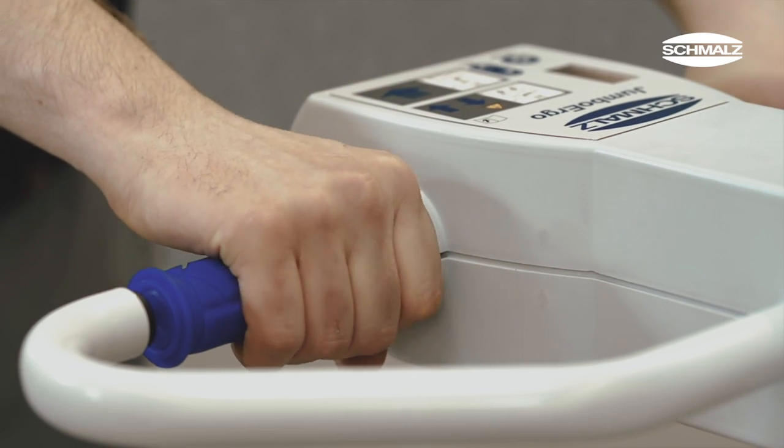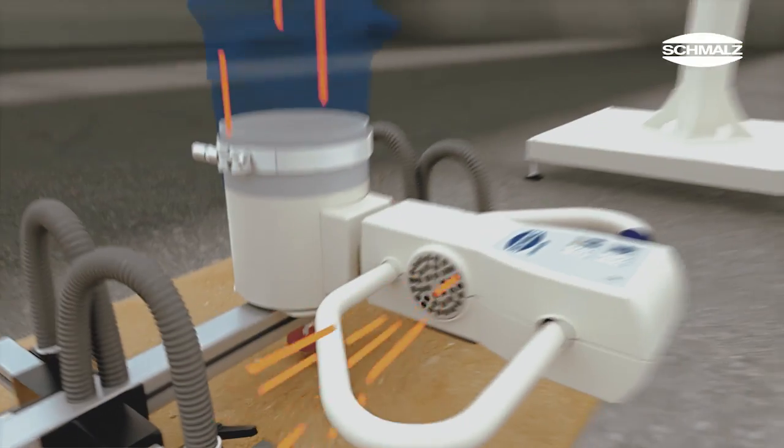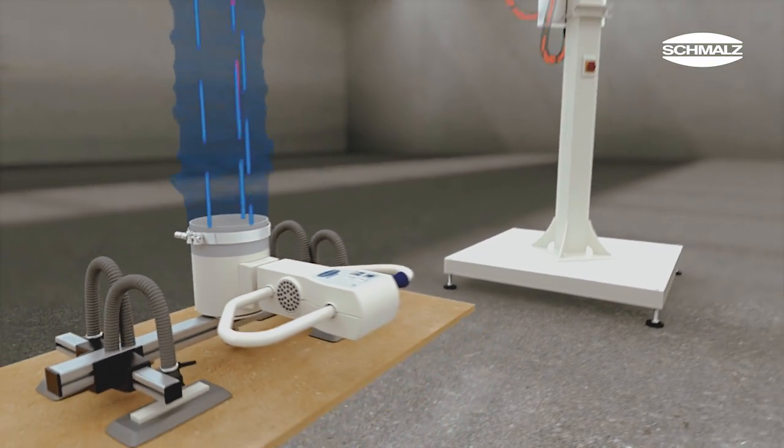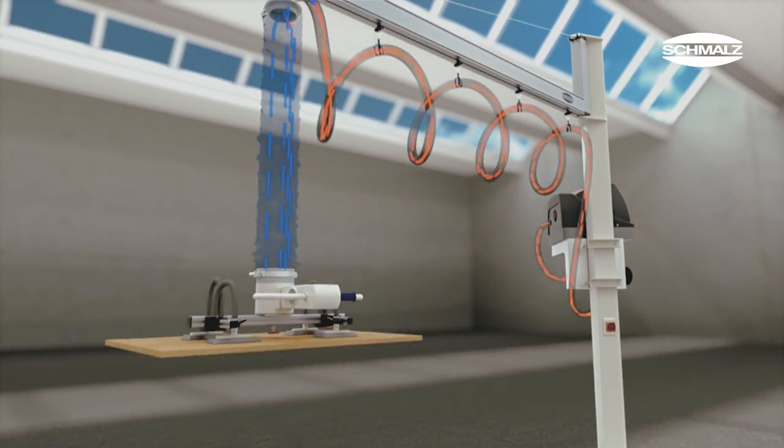The control handle is equipped with a twist grip. It is designed to operate like a motorcycle throttle. As the operator rotates the grip away from himself, vacuum is generated.